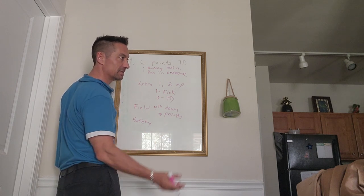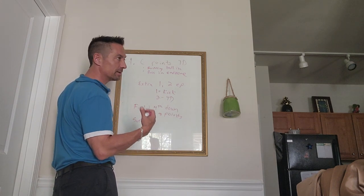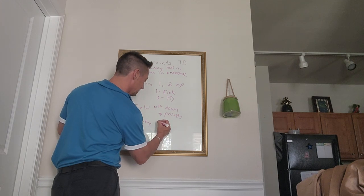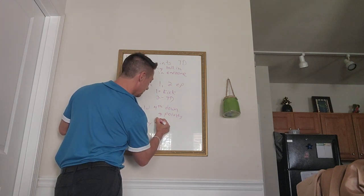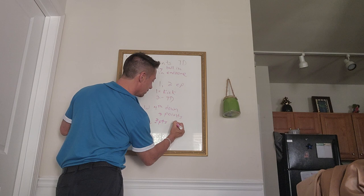For the most part it can happen other ways - ball goes out of the end zone or gets knocked out - but for the most part, just keep in mind the safety is two points in the other person's end zone.